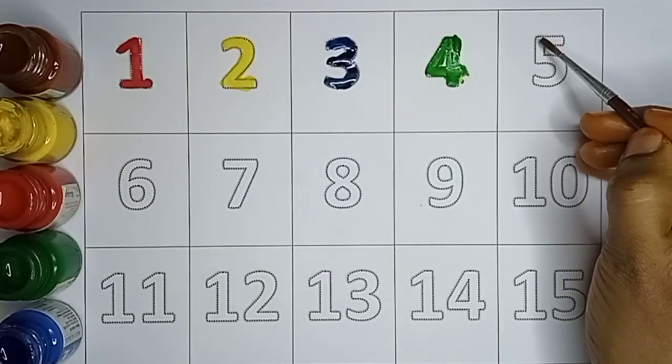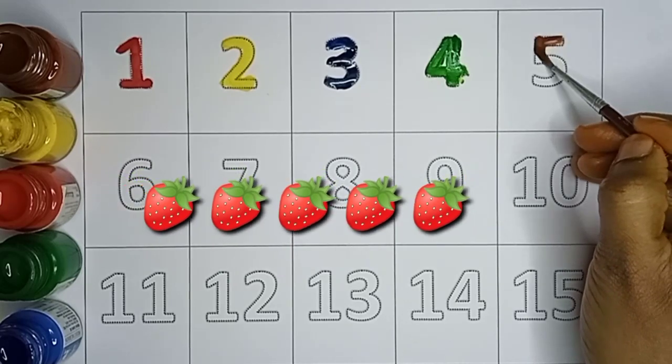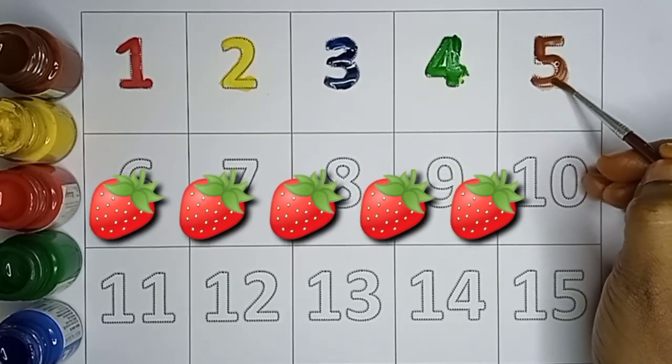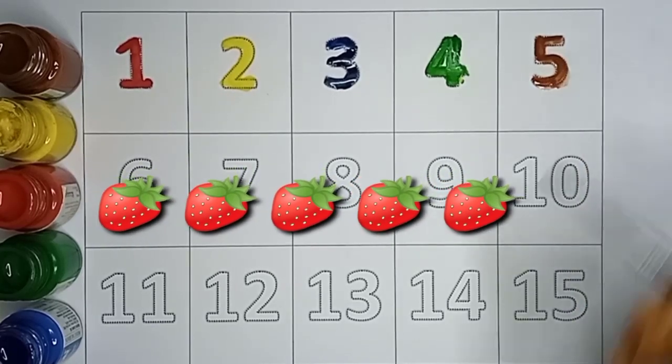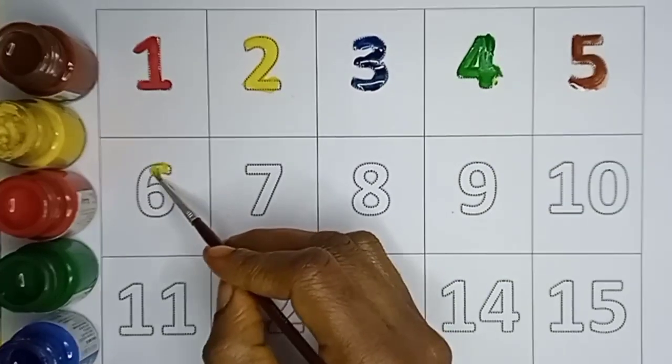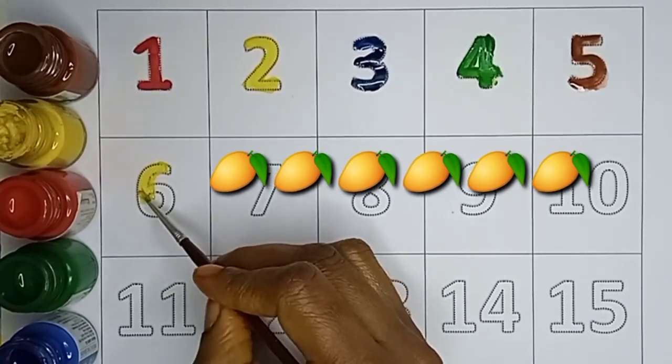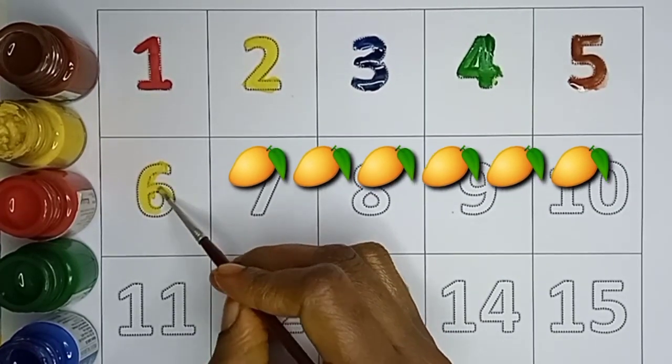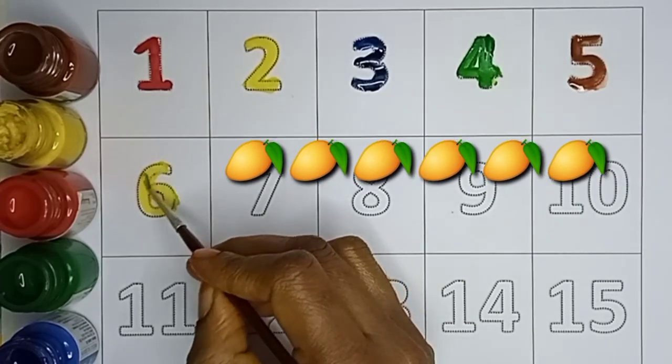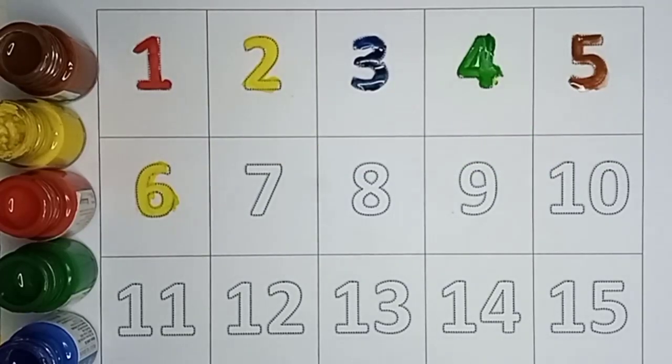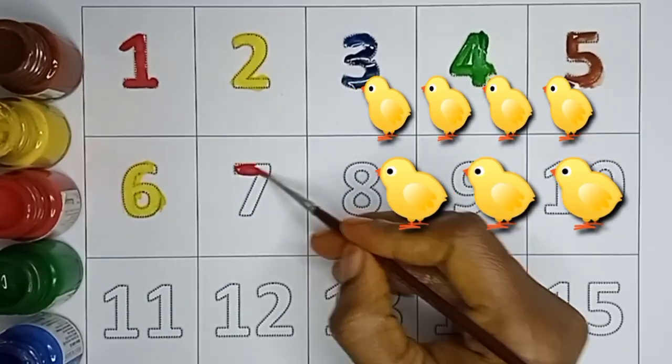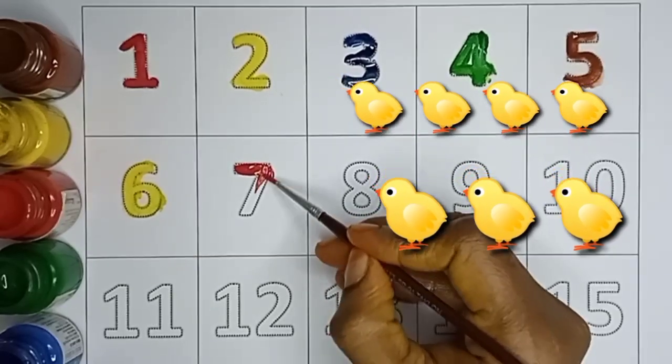Brown color. Five, five strawberries. Yellow color. Six, six mangos. Red color. Seven, seven chickens.